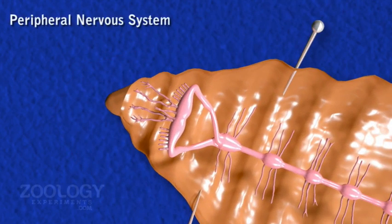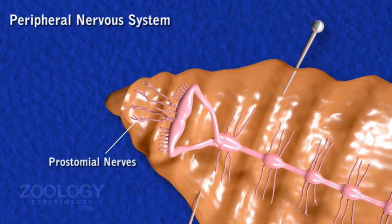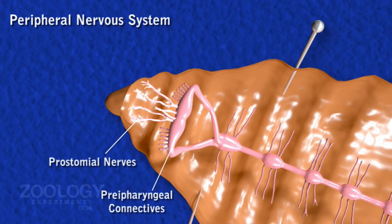In the Peripheral Nervous System, eight to ten nerves arise laterally from each cerebral ganglion, which enter the prostomium and buccal chamber. Nerves from the circumpharyngeal connectives supply the peristomium.